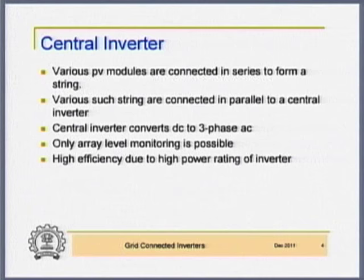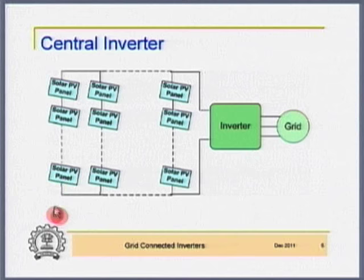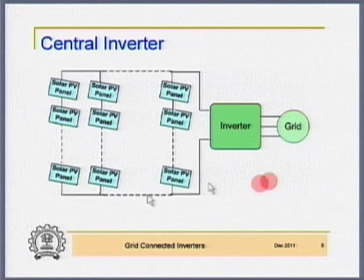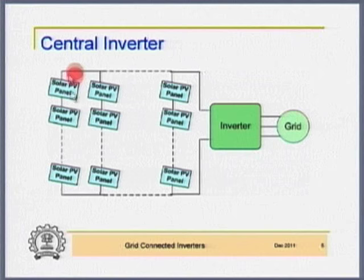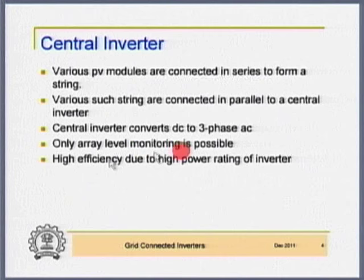Central inverter: various PV modules are connected in series to form a string. There are N solar PV panels in one string, and N such strings connected directly to the inverter, and the inverter to the grid — a high power inverter. Various strings are connected in parallel, and the central inverter converts this DC to AC.